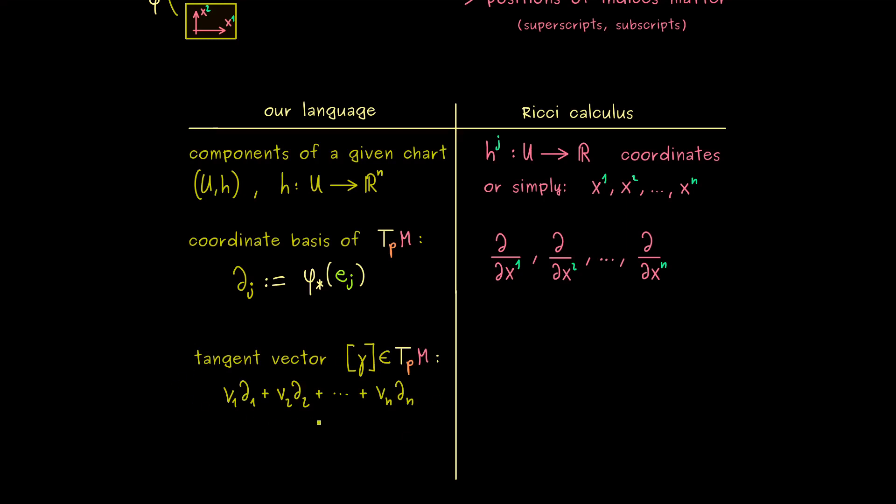So you could say this is simply given by v^1 ∂_1 + v^2 ∂_2 and so on. And in fact this is exactly the standard in the Ricci calculus. However, you might already know for the components v we now use superscripts, and then we would also sum the whole thing until we reach v^n.